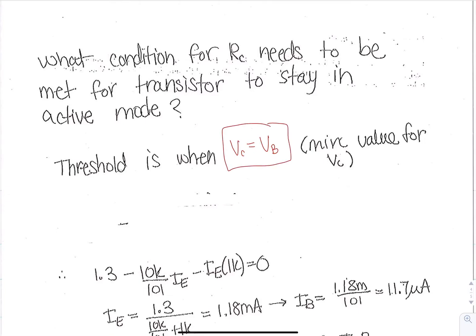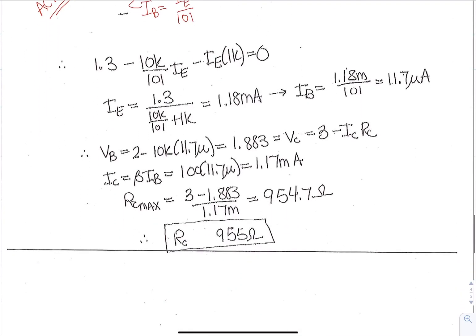And so what we want to do is look at it now in the active region and analyze it that way. So what condition for RC needs to be met for a transistor to stay in active mode? So the threshold, remember, is when VC equals VB. So this is where we want the condition to hold. Therefore, this would be the minimum value that VC can be, and then it needs to be greater than VB to stay in the active region. So the equation we had was the 2 minus 10K times IB minus 0.7 minus IE times 1K was the loop equation from the base to the emitter. Now we're looking at solving this with the active conditions. We can use that IB is equal to IE over 101 and plug that in and solve for IE. And this is the algebra to solve that. So again, you can use that as an exercise to solve. And you get a solution for IE and IB here.